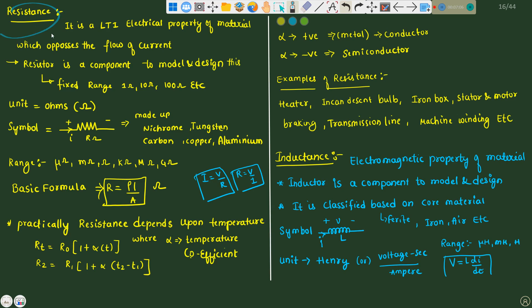If you talk about the resistance, it is a LTI, linear time invariant electrical property of a material which opposes the flow of current. Just remember, resistance is an electrical property of a material which opposes the flow of current. Resistor is a component, resistor is a device with fixed range of 1 ohm, 10 ohm, 100 ohm, and it can be modeled and designed as per our requirement.